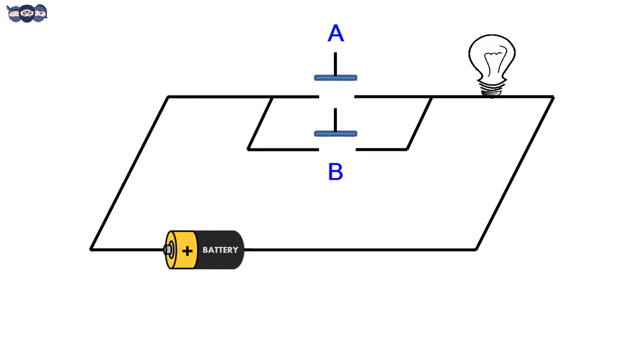It is similar to two switches in parallel. The circuit is complete when either of the inputs is at logic 1 or both at logic 1, which makes the bulb glow.